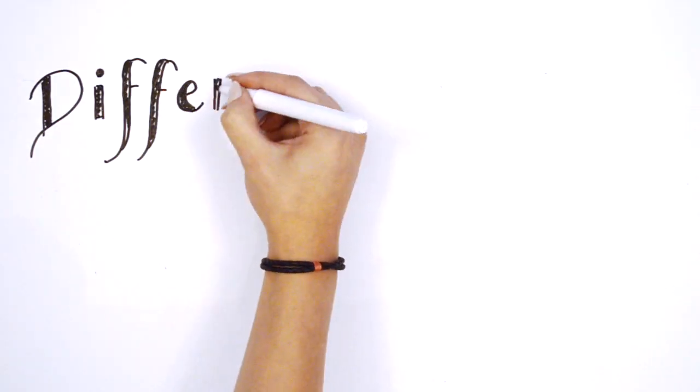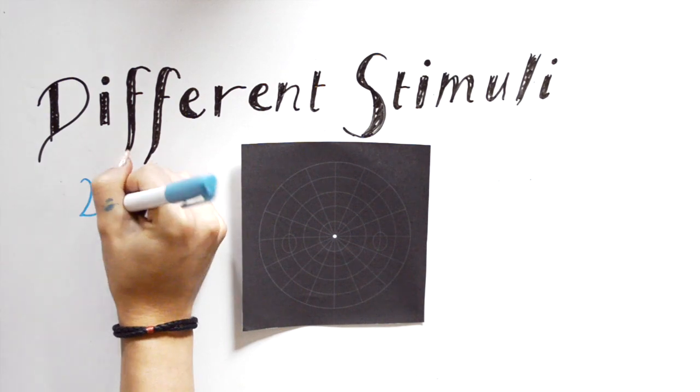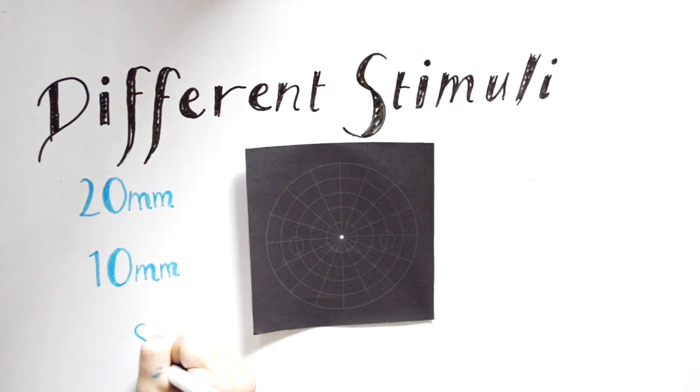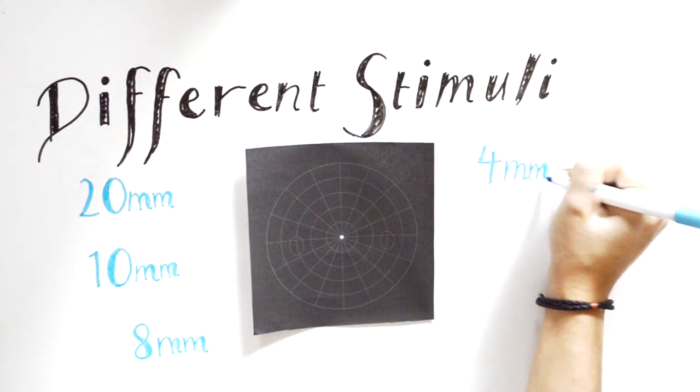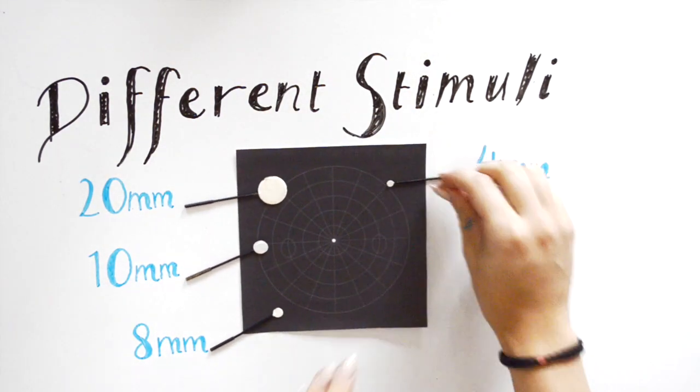Prior to testing, we need to select the correct stimulus. We typically utilize a white stimulus for maximum contrast against the black tangent screen. The sizes of the stimuli correlate to the patient's presented visual acuity. The lower the VA, the larger the target size.